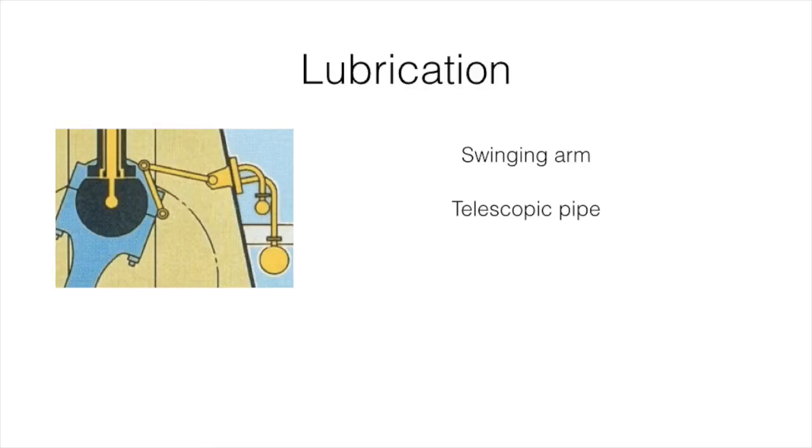A separate supply is led via a swinging arm or telescopic pipe to the crosshead, where some of it is diverted to cool the piston while some is used to lubricate the crosshead and guides. The rest is led to the connecting rod and the bottom end or crank pin bearing.